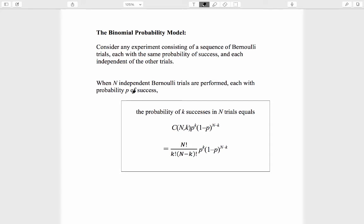When n independent Bernoulli trials are performed, each with probability p of success, the probability of k successes in n trials equals n choose k times probability of success on a single trial raised to the power of the number of successes times probability of failure on a single trial raised to the number of failures. We can rewrite that in terms of the factorials if we wish, but the first way of writing it is perfectly fine.